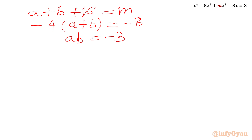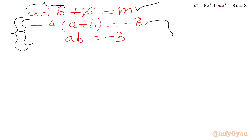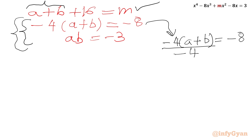We will use the first equation once we know A plus B. So let us consider the second equation. Dividing both sides by minus 4: minus 4(A plus B) = minus 8, so A plus B equals minus 8 divided by minus 4, which gives A plus B equal to 2.